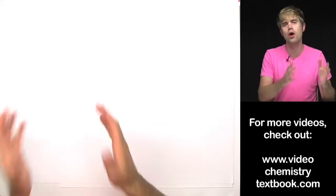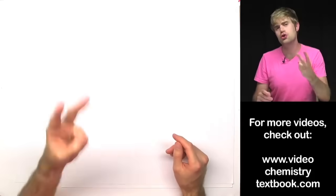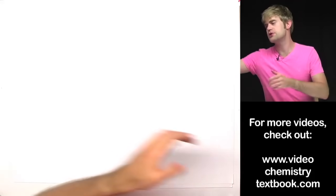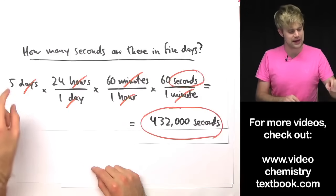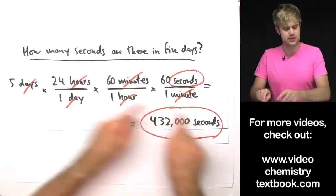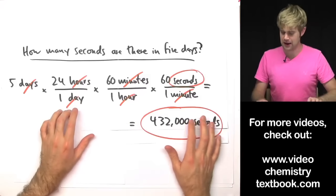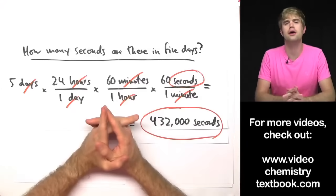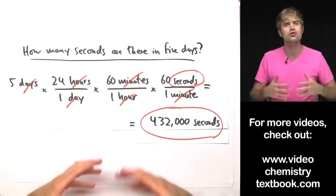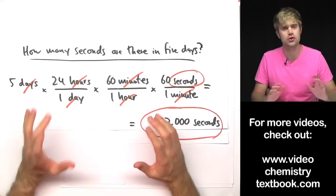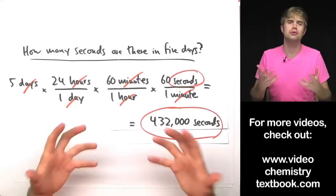That's how you convert from one unit to another by setting up conversion factors and canceling units. There are two more videos that may interest you. The first shows how to string multiple conversion factors together — for example, converting from days all the way to seconds by setting up a chain of conversion factors. The second video covers the rationale behind why you set up conversion factors the way you do, why units cancel, and how this relates to things you can more easily understand.